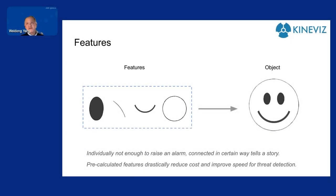Let me quickly introduce why we want a feature graph. What exactly is a feature? Here's an example: you have a smiley face. A smiley face has many elements like the circle, the dot, the line, the curve at the bottom. They all come together to represent a smiley face.